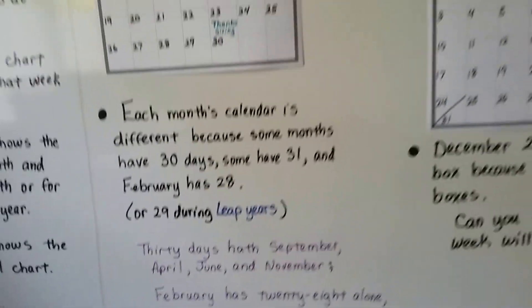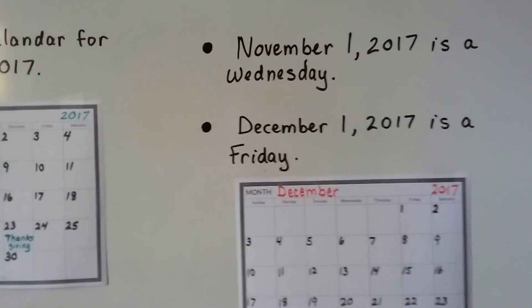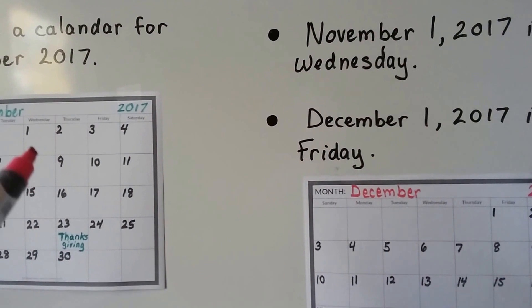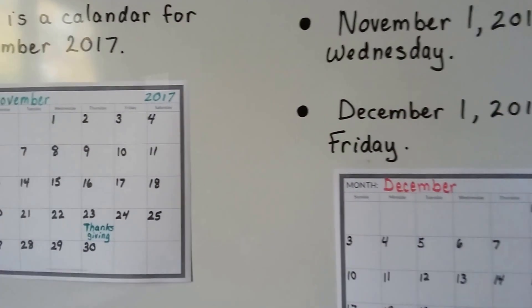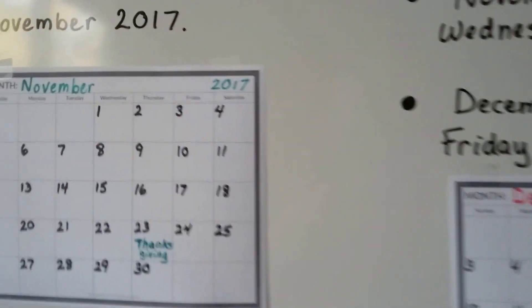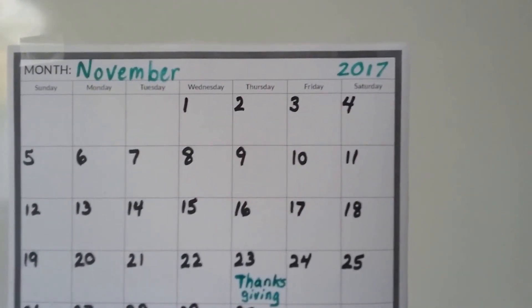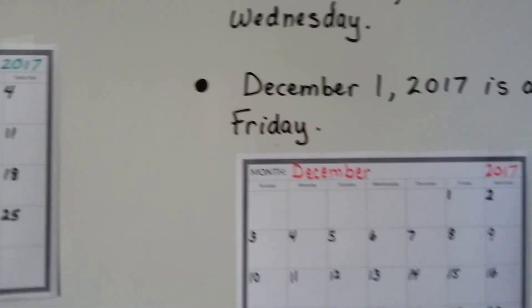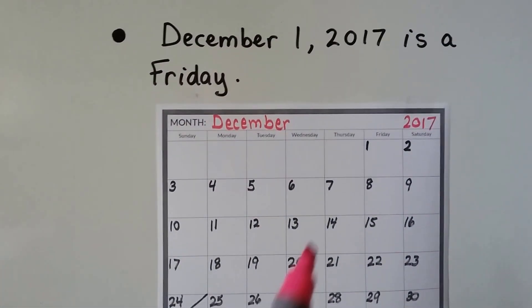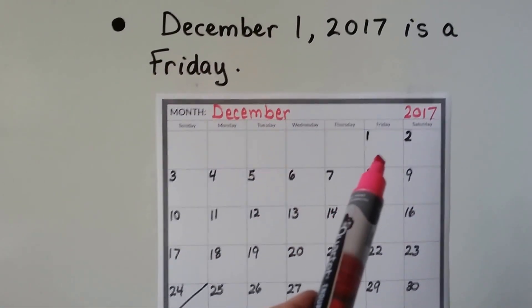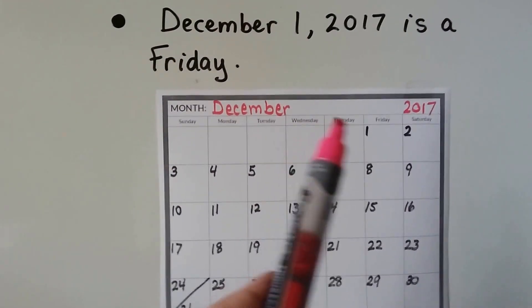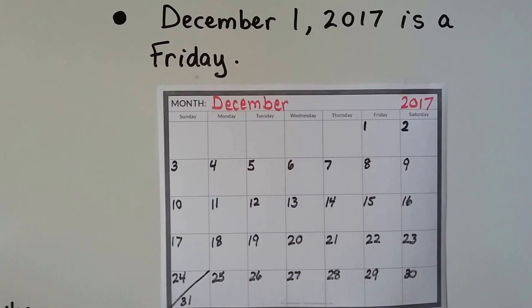So, November 1st, 2017 is a Wednesday — we can see that right here. December 1st of 2017 is a Friday. November fell on a Wednesday, December falls on a Friday.